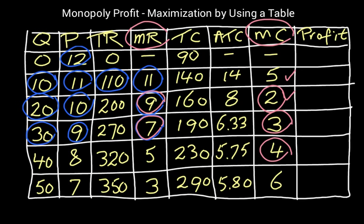3 and 7 is getting closer. 4 and 5, that looks like the closest one. If we look at the next one, 6 and 3, that's not as close, first of all. And also, the marginal cost there is greater than marginal revenue, so we definitely don't want that.